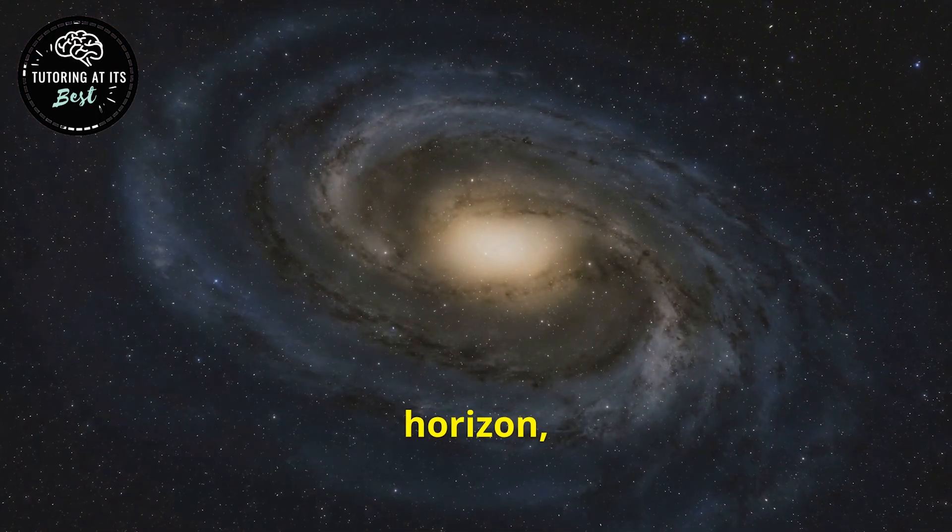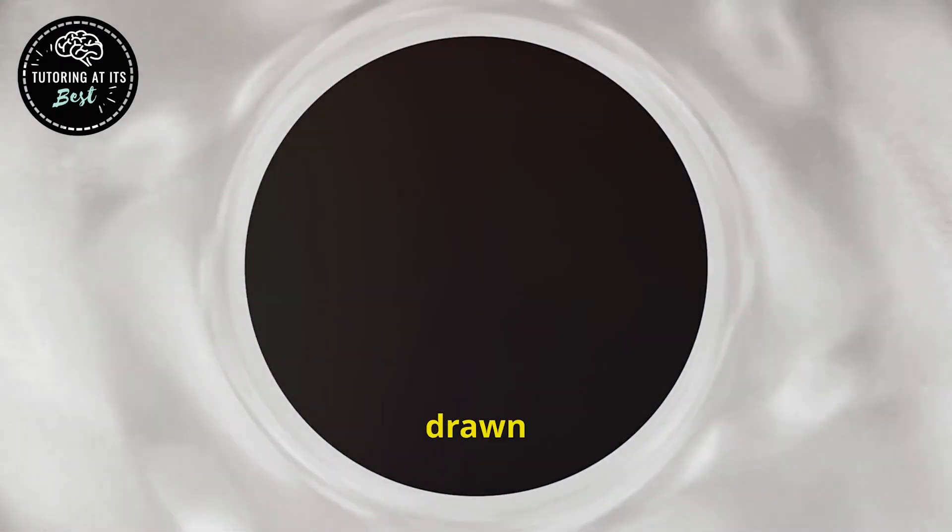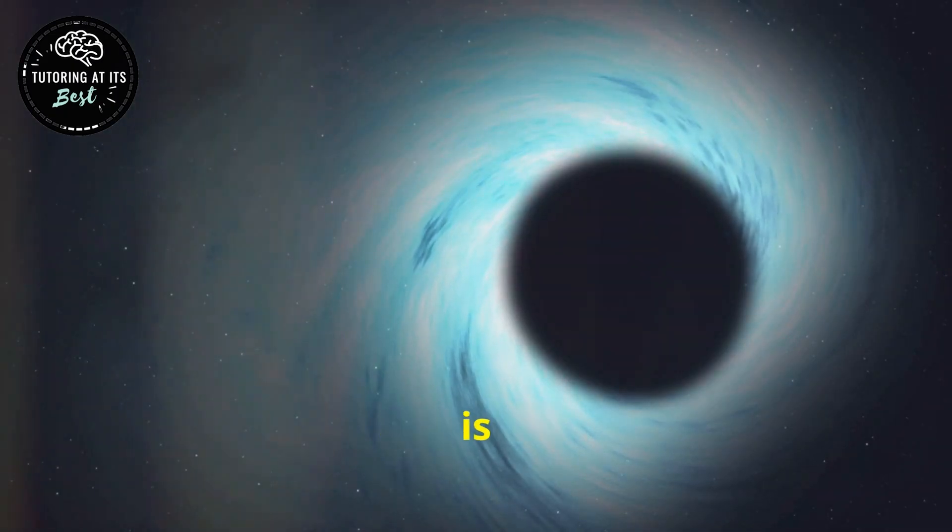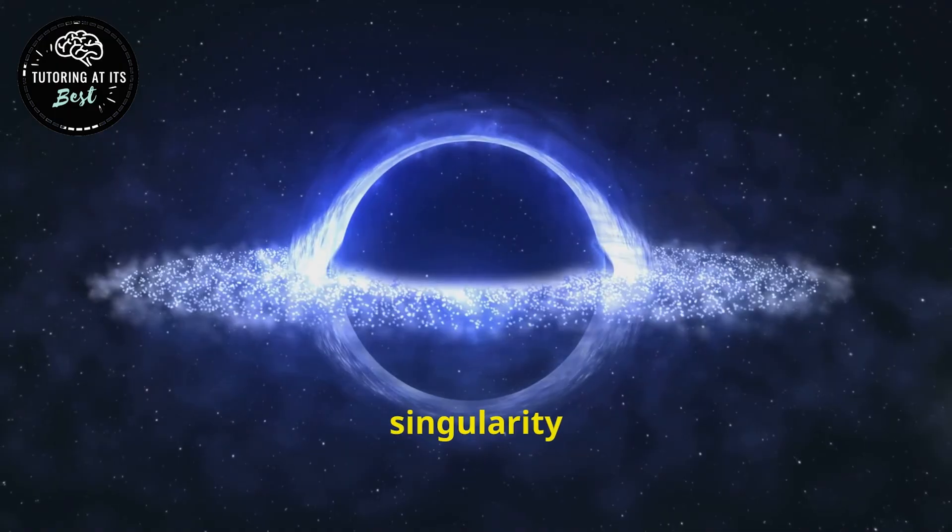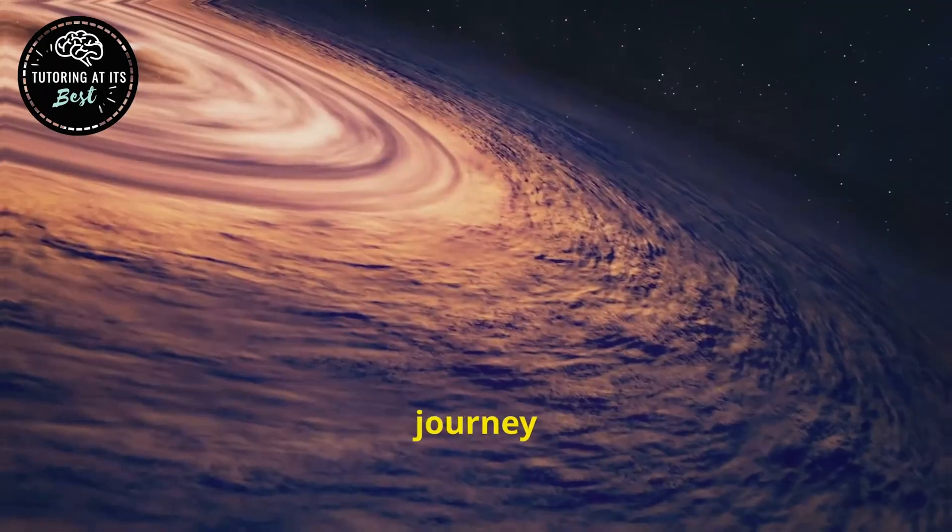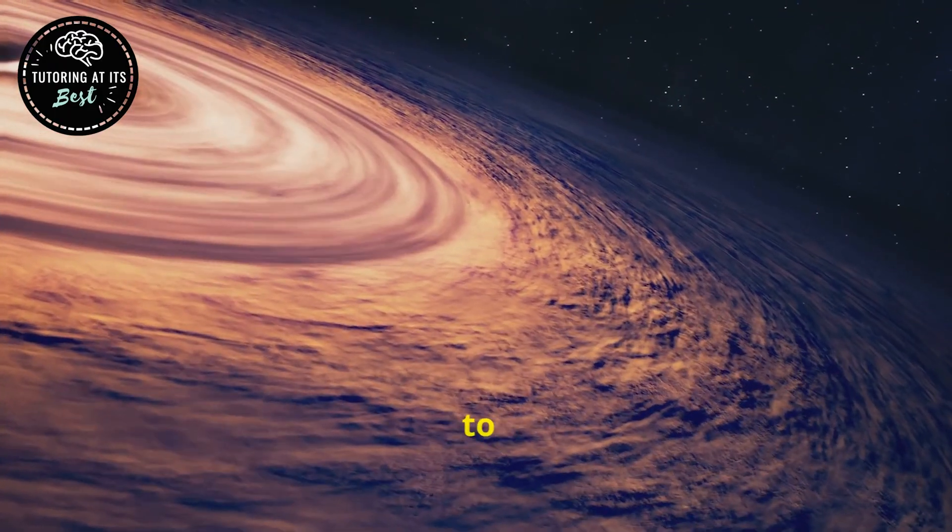Once you crossed the event horizon, there would be no turning back. You would be inexorably drawn towards the singularity at the centre of the black hole. The singularity is a point of infinite density where all the matter of the black hole is concentrated. What happens at the singularity is a mystery. The journey into a black hole is a one-way trip to the unknown.